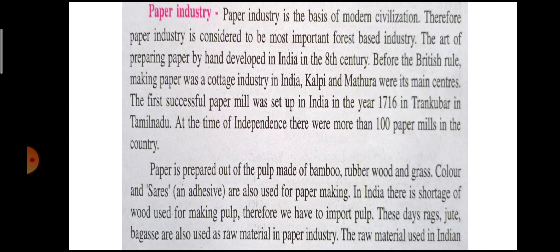In our country, paper is prepared out of the pulp made of bamboo, rubber wood, and grass. Colors and dyes are also used for paper making. In India there is a shortage of wood used for making pulp, therefore we have to import pulp these days.